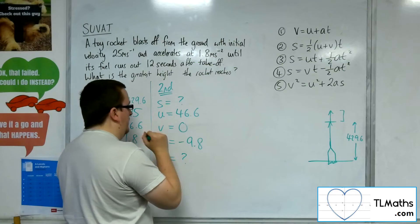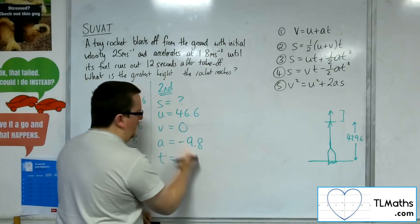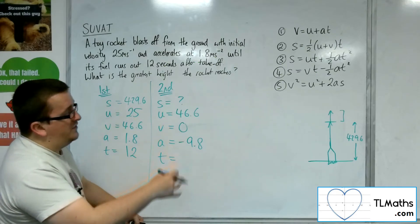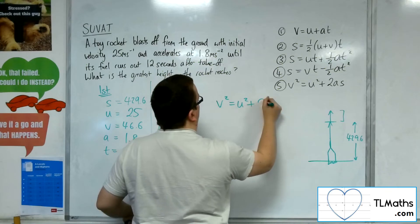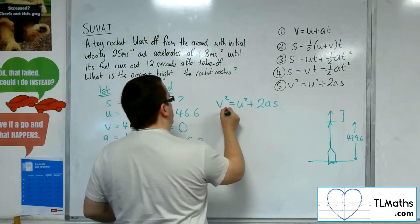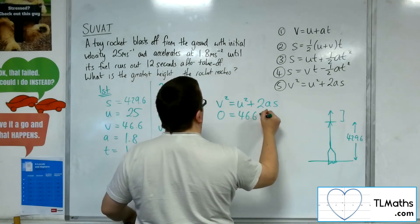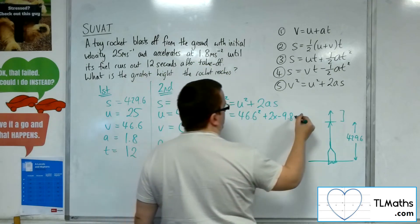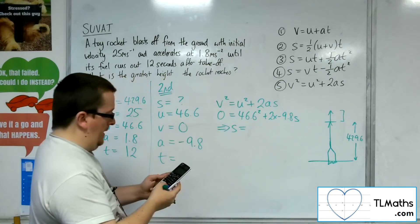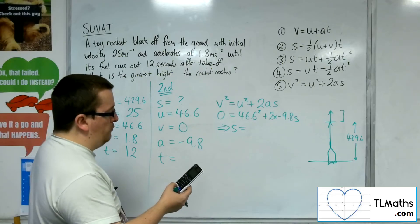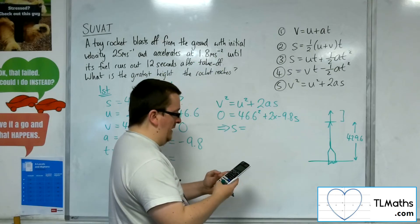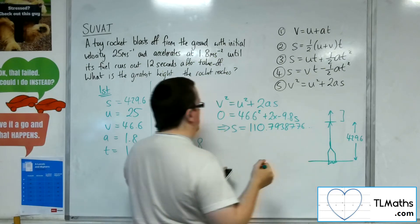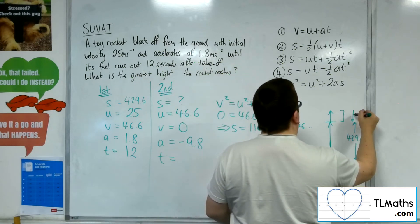And I don't know T, and I don't know S. But the question doesn't ask me for T. I could find it just as easily as I would any of the other problems. But I want S. So I'm looking for the equation that doesn't have T, which is the last one. So V squared equals U squared plus 2AS. So the V squared is zero. U squared is 46.6 squared plus 2 lots of minus 9.8 times by S. So I'm going to rearrange that. 46.6 squared is 2,171.56. Divide that by 2, divide that by 9.8, and I get S as 110.7938776. So that is how far it's travelled in the second section.